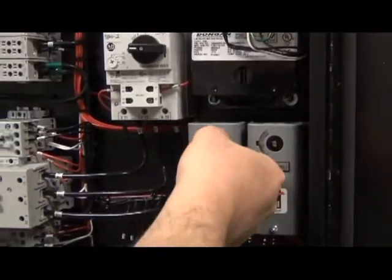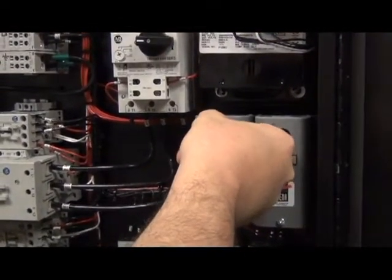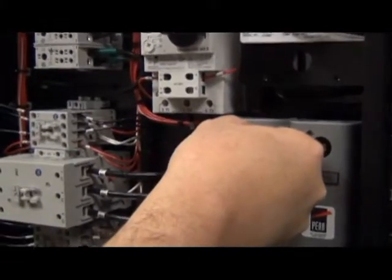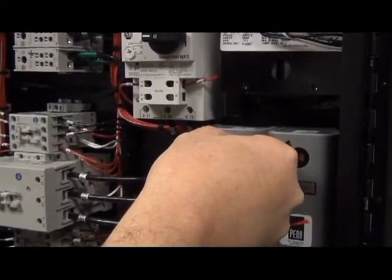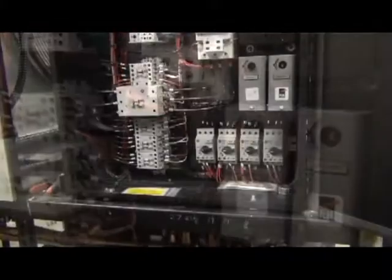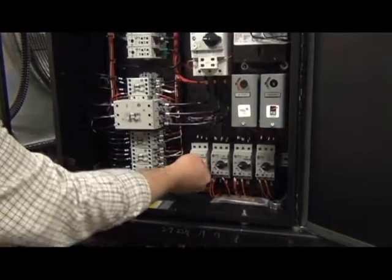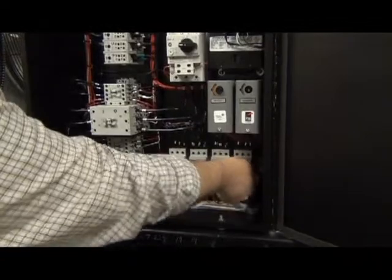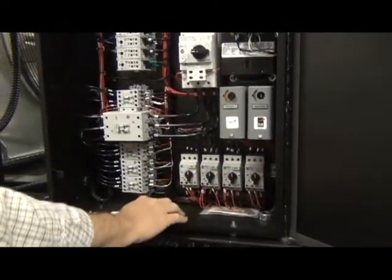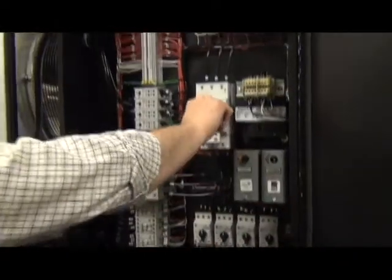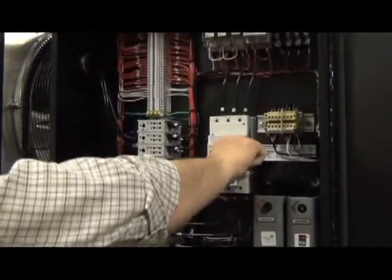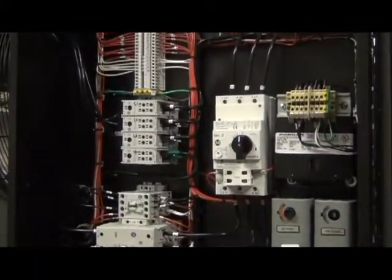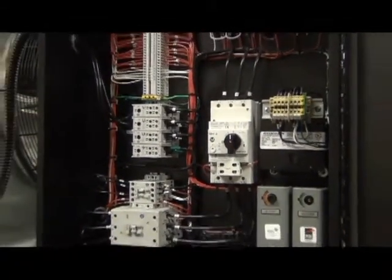At this point you want to verify that your set point thermostat is set to its proper setting, I believe in this case 46.4 degrees. Next we want to ensure that the breakers are all turned on. These breakers have been factory set for their proper settings at the factory. You just need to turn them on, make sure they're in the right position, as well as the compressor breaker. Once those are all on, then we can start our pump.